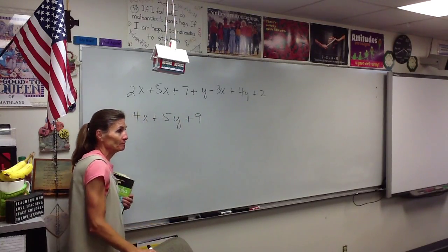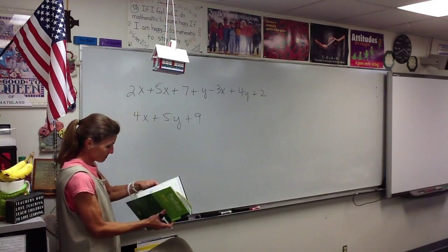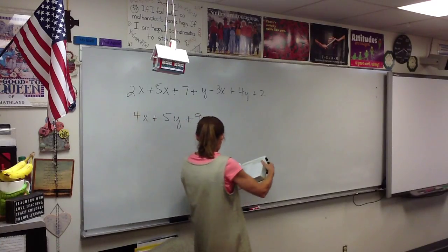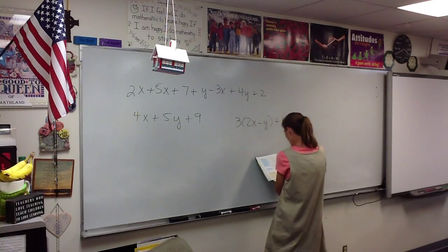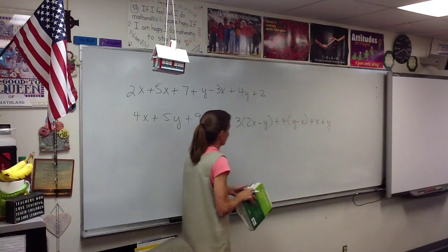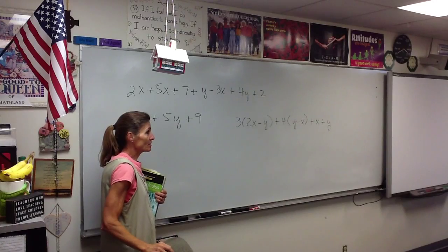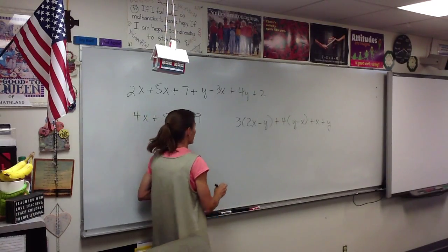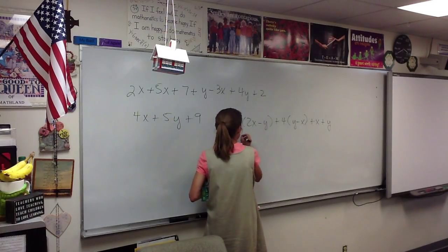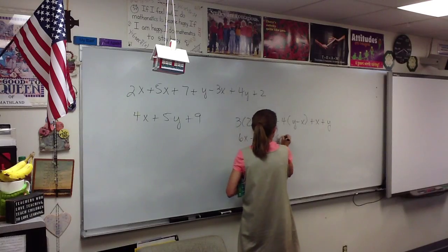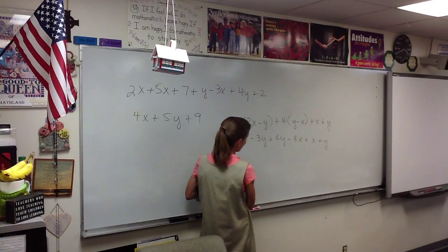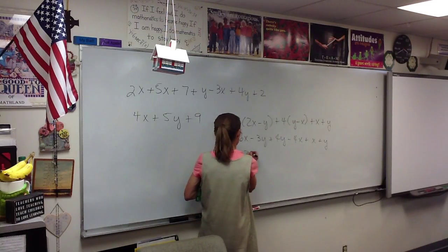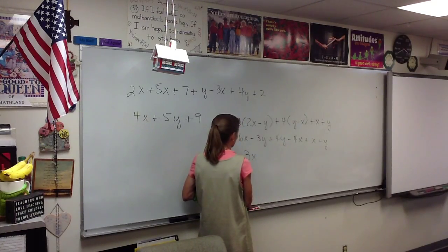Everybody okay? So we have no problem collecting like terms. Let's take a look at number three — it's kind of the same thing with a little additional step. How would we start this one? Distribute. So if I distribute all the way: 6x minus 3y plus 4y minus 4x plus x plus y. Then we collect like terms — how many x's? About three of them. And then you're going to have two y's.